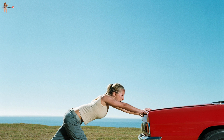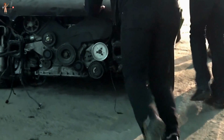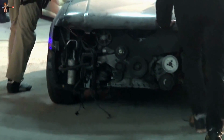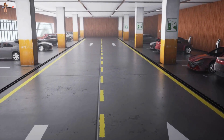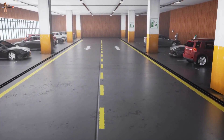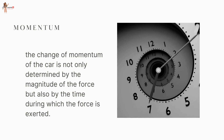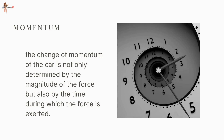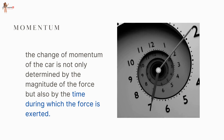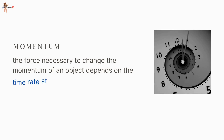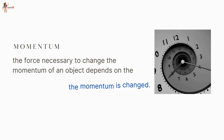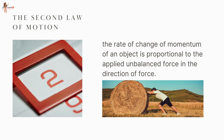Consider a situation in which a car with a dead battery is to be pushed to a speed of 1 meter per second to start its engine. If one or two passengers give a sudden push, it hardly starts. But a continuous push over some time results in gradual acceleration to this speed. This means the change of momentum of the car is not only determined by the magnitude of the force but also by the time during which the force is exerted. Therefore, the force necessary to change the momentum of an object depends on the time rate at which the momentum is changed.